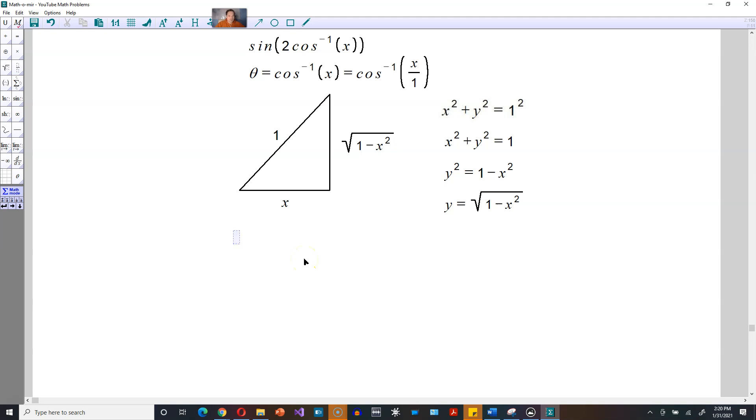Now you can replace cosine inverse of x with theta by its definition up there, so it's going to be sine of 2 theta. There's a trig identity that says the following is true: 2 cosine of theta times the sine of theta. You can replace the cosine and sine with the definitions from the triangle.